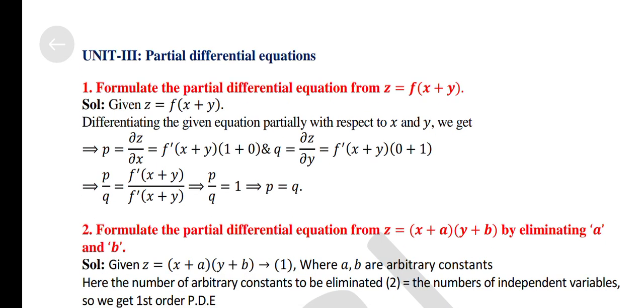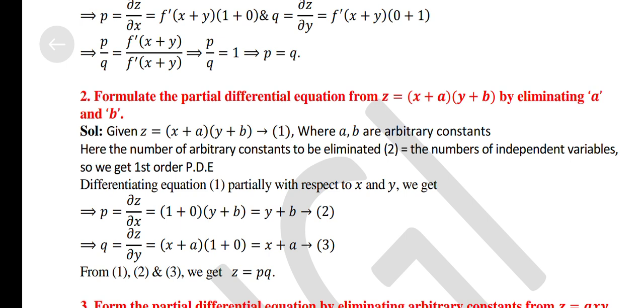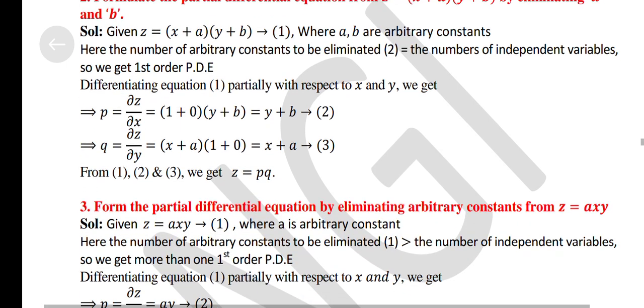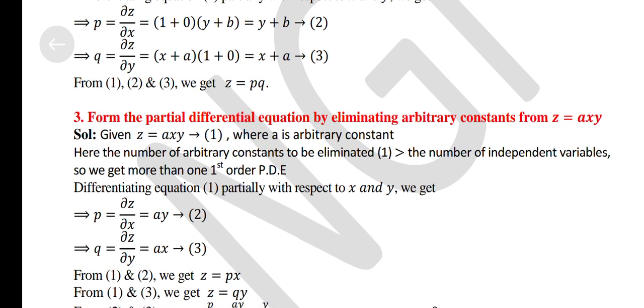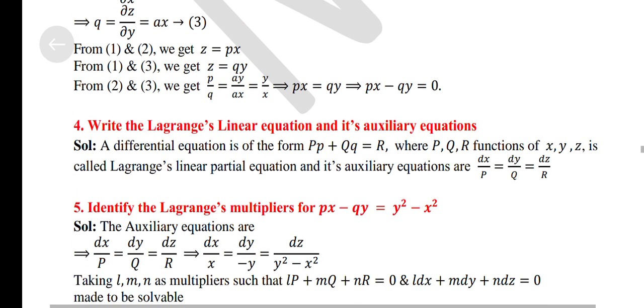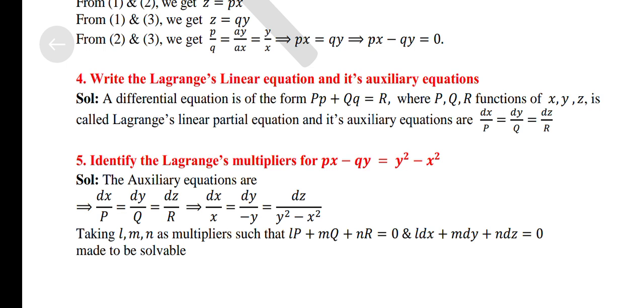Unit 3: Partial Differential Equations. Formulate the partial differential equation from z = f(x + y). Formulate the partial differential equation from z = (x + a)(y − b) by eliminating a and b. Form the partial differential equation by eliminating arbitrary constants from z = axy. Write the Lagrange linear equations and its auxiliary equations.